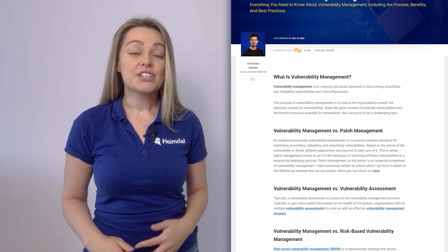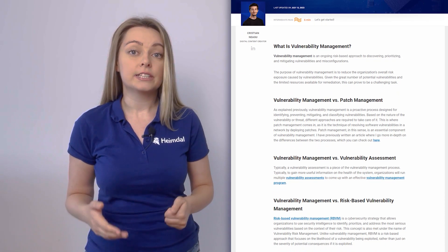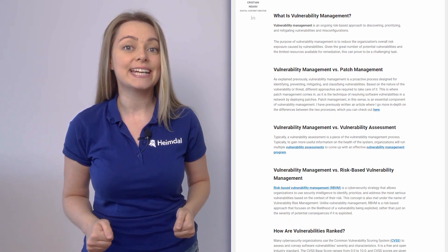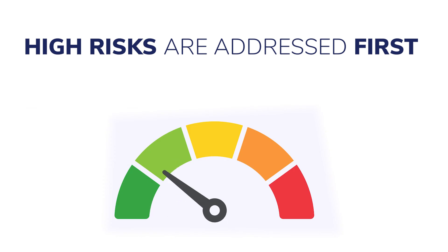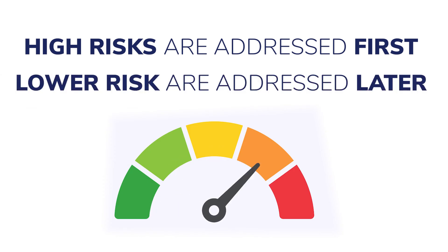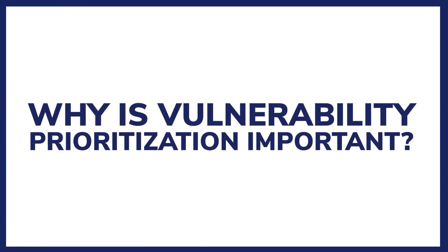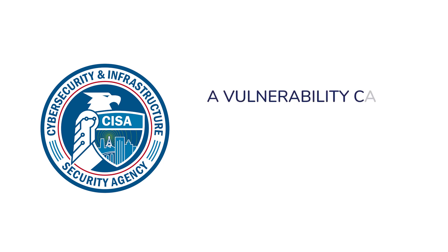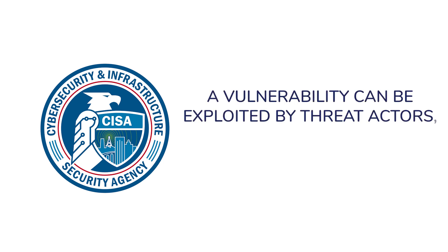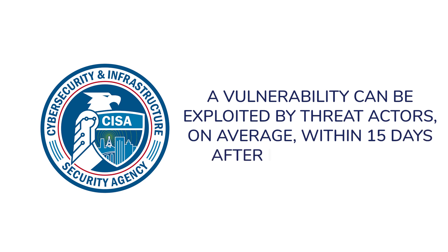Vulnerability prioritization is an important step in the vulnerability management workflow, setting the groundwork for the following phases. Its goal is to ensure that vulnerabilities representing a high risk for the organization are addressed first, while lower risk vulnerabilities are fixed later. According to the Cybersecurity and Infrastructure Security Agency, or CISA, a vulnerability can be exploited by threat actors on average within 15 days after it is discovered.